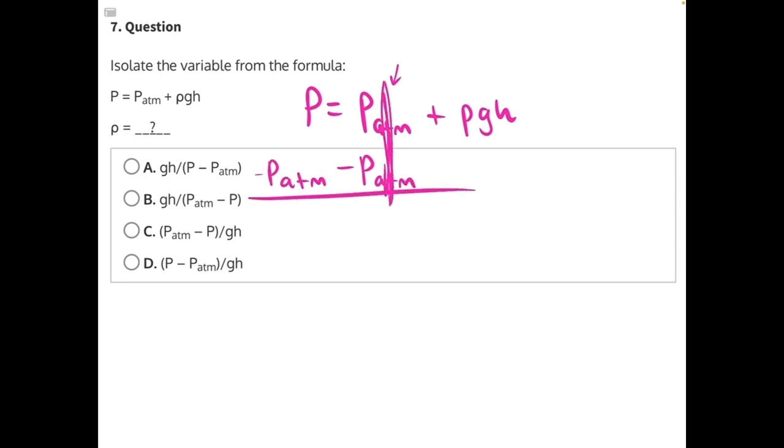These P_atm will cancel, leaving us with P minus P_atm equals ρgh.